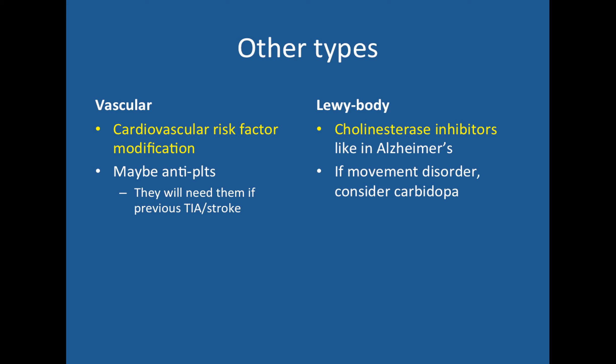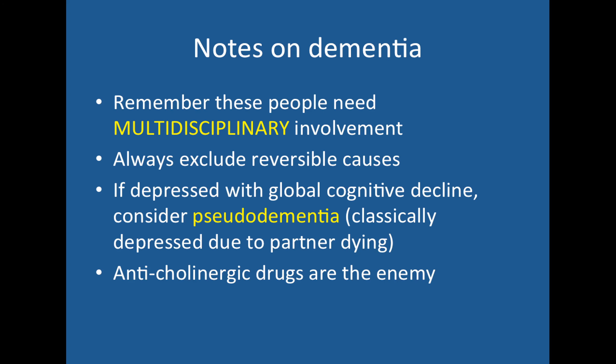For vascular dementia, modify their cardiovascular risk factors and consider antiplatelets — most of these patients will already be on them after strokes or TIAs. Lewy body dementia is treated like Alzheimer's with cholinesterase inhibitors. If they're showing signs of Parkinson's, refer to a neurologist who may consider starting carbidopa.